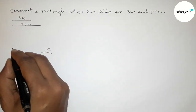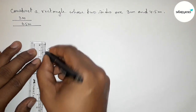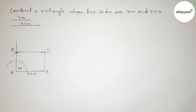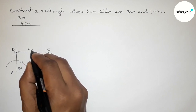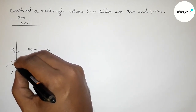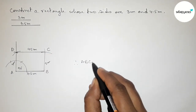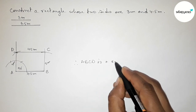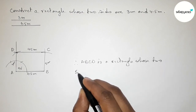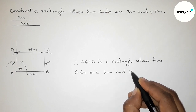Taking point C and point D. Joining B to C, then joining C to D. This side is 4.5 centimeters, this side is 3 centimeters, and this side is also 3 centimeters. Therefore ABCD is a rectangle whose two sides are 3 centimeters and 4.5 centimeters.